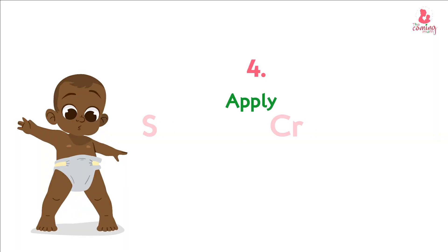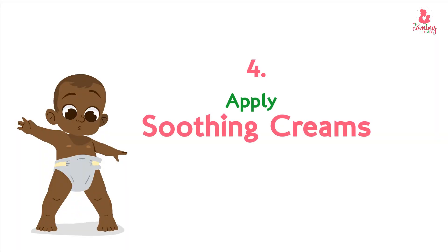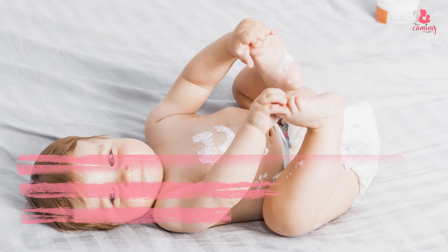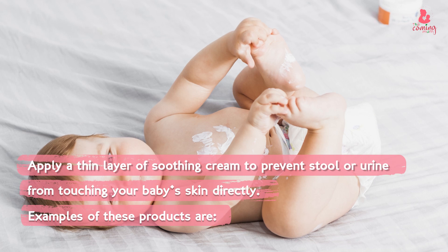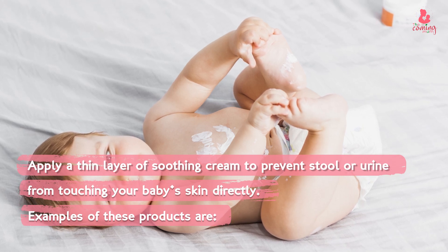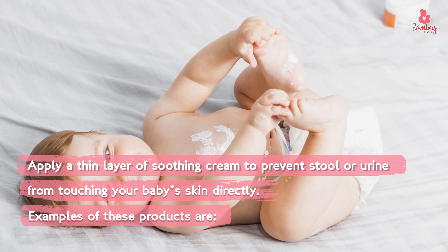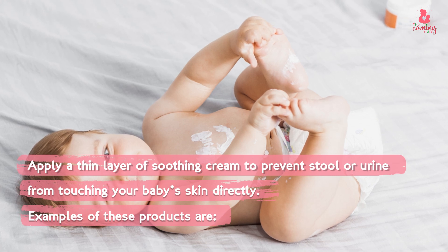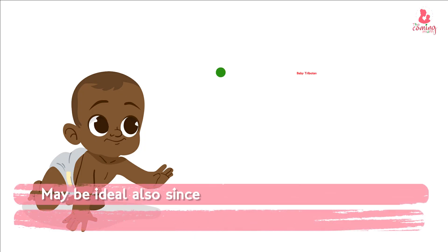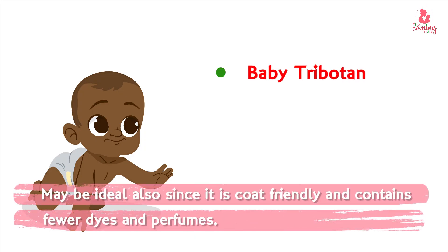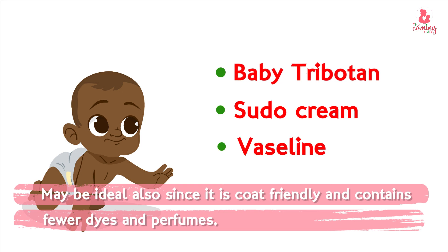Tip number four: apply soothing creams. Apply a thin layer of soothing cream to prevent stool or urine from touching your baby's skin directly. Examples of these products are Baby Tribotan, Sudocreme, and Vaseline, which may be ideal since it is cost-friendly and contains fewer dyes or perfumes.